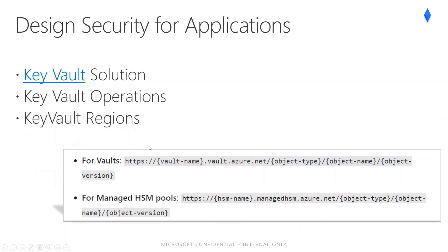Azure Key Vault helps solve several problems. For Secrets Management, it can be used to securely store and tightly control access to tokens, passwords, certificates, API keys, and other secrets. For Key Management, Azure Key Vault makes it easy to create and control the encryption keys used to encrypt your data. For Certificate Management, Azure Key Vault lets you easily provision, manage, and deploy public and private TLS/SSL certificates for use with Azure and internal connected resources. Azure Key Vault has two service tiers: Standard, which encrypts with a software key, and Premium, which includes HSM-protected keys.